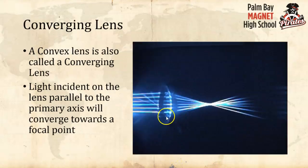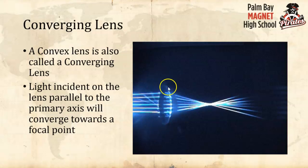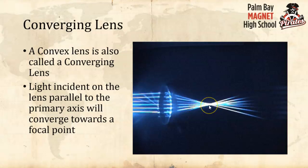The other type is the converging lens — a convex lens, fat in the middle and skinny on the outsides. All the light coming in parallel converges towards the central focal point and then continues out the other side. This is your reading glasses or magnifying glass.